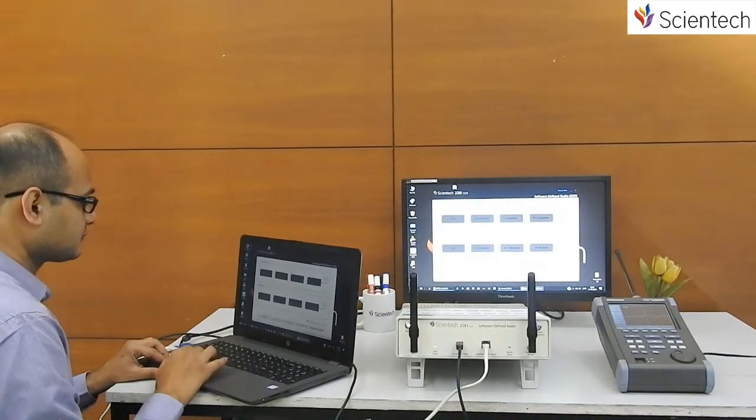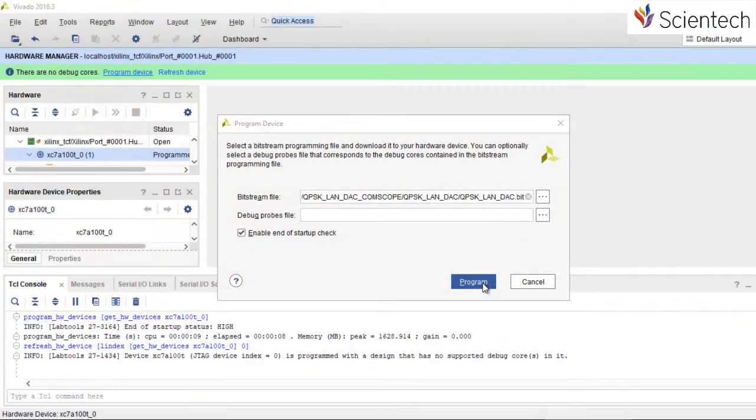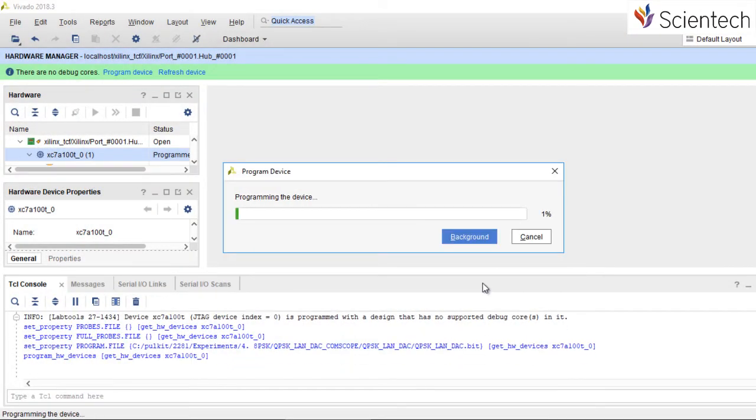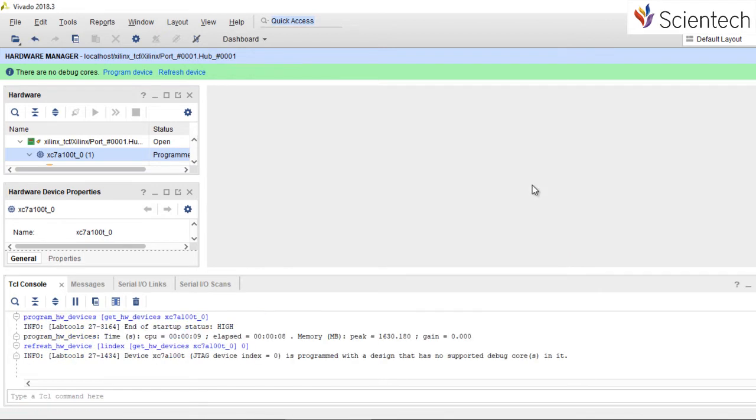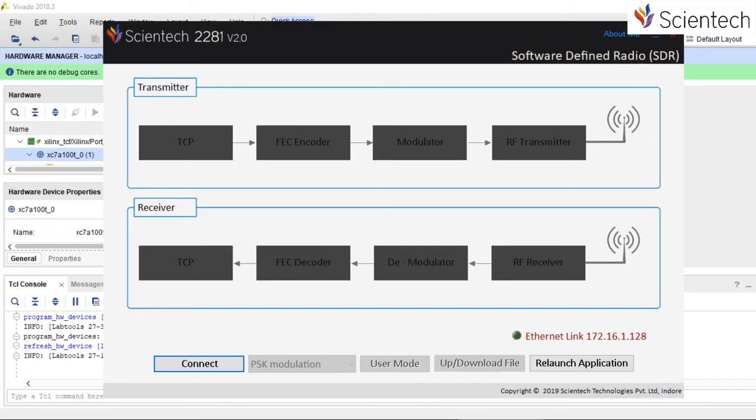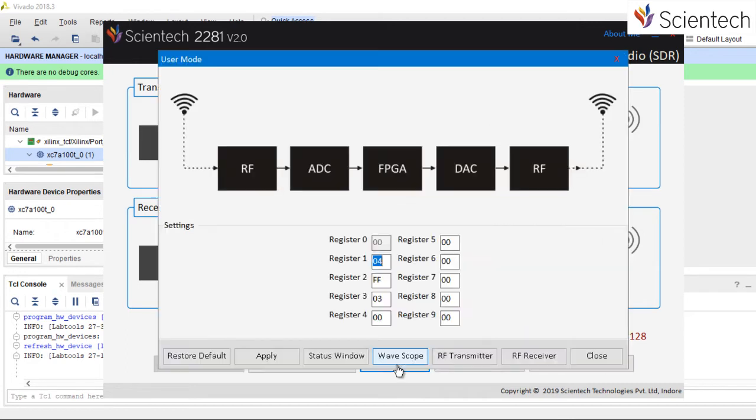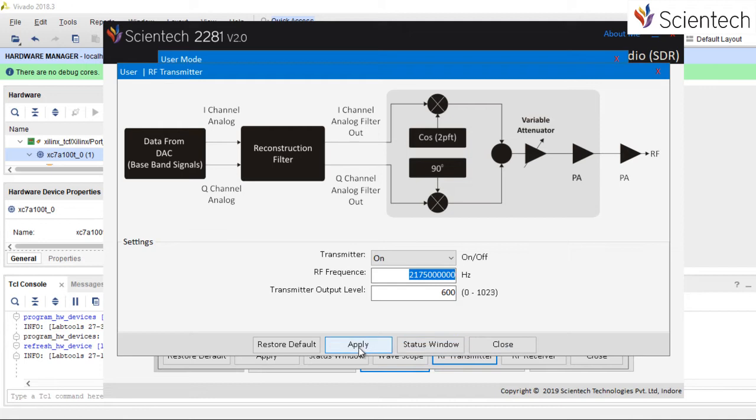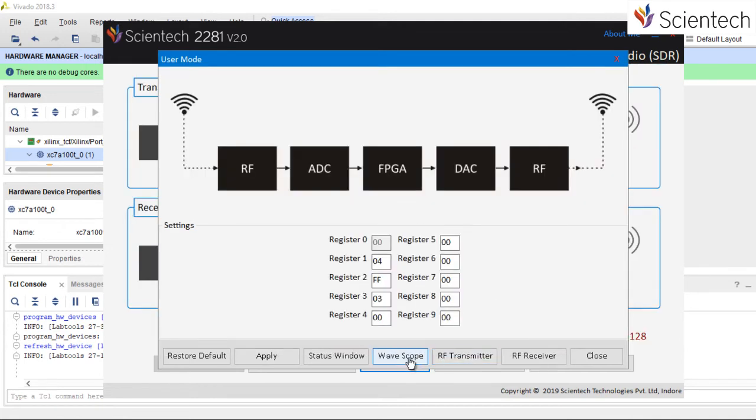Now let's see how it works. First of all, we will configure FPGA with 8PSK.bit file. Now we will open the SDR software and connect it with the hardware. Now let's do the necessary settings to observe the baseband IQ signals on WaveScope.